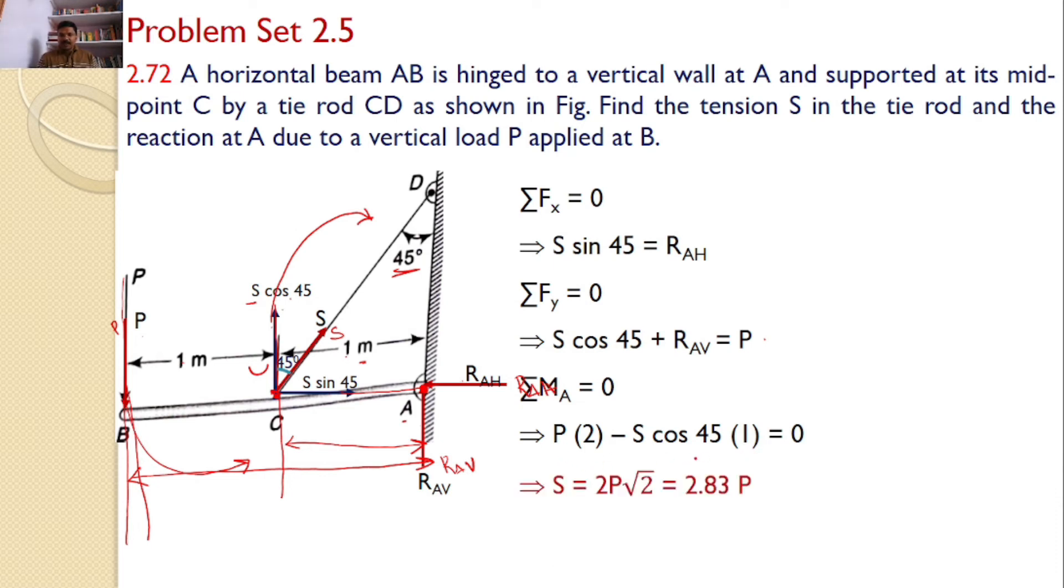Upon simplification, you will get S equals 2P times root 2, or 2.83 times P. Now, substitute into the above equations. S sin 45 equals RAH, and you know S equals 2.83 times P. If you substitute this back, you will get RAH equals 2P. And similarly, if you substitute here, you will get RAV equals minus P.